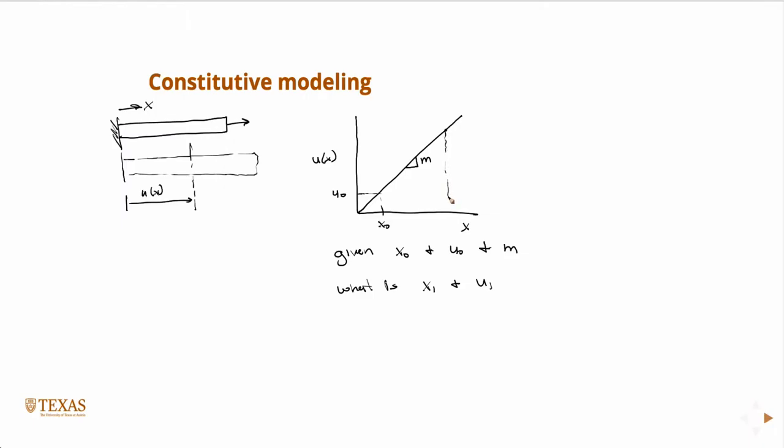Or, what I should say is: what is u1 at x1? And x1 is the control variable, right? So what is u1? Well, it's just the equation of a line.